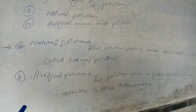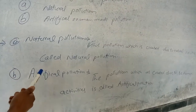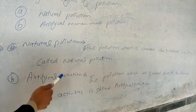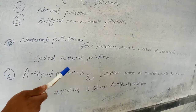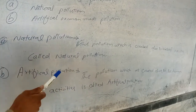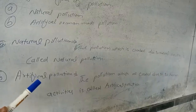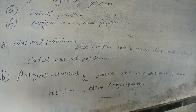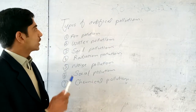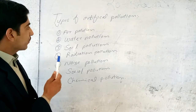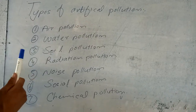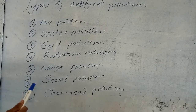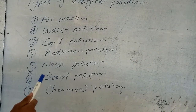The second type is artificial pollution. The pollution which is created due to human activities is called artificial pollution. There are many types of artificial pollution. The first one is air pollution, water pollution, soil pollution, radiation pollution, noise pollution, social or political pollution, and chemical pollution.